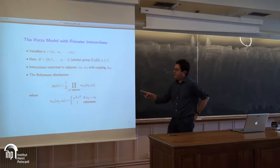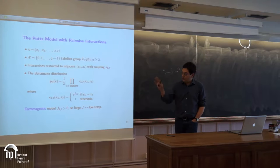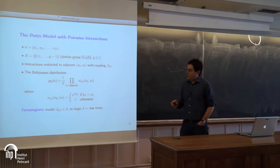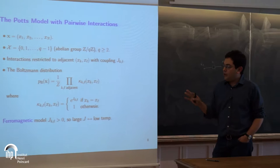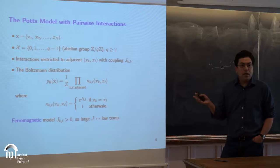t is the temperature, and I set t equal to 1, so I ignore temperature. My model is ferromagnetic, meaning the couplings are positive. With this setup, if j is large it means I'm at low temperature; if j is small it means high temperature. So instead of playing with t, I play with j.